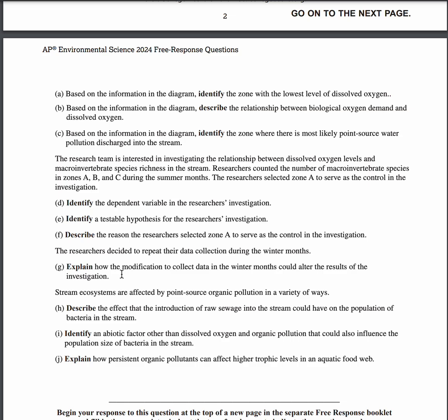For part G, collecting data in the winter will increase dissolved oxygen, as lower temperature waters hold higher amounts of DO. This could affect the ability of the environment to support different species, which could alter the results of the investigation. For part H, it can increase non-native bacteria in the water. For part I, examples include pH and the amount of sunlight that can reach the water. For part J, organic pollutants can bioaccumulate in lower trophic level species, leading to biomagnification in higher trophic level species, which can cause health damages such as difficulties in reproduction.